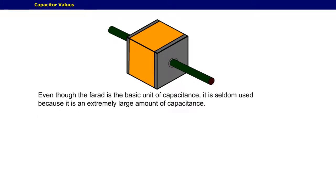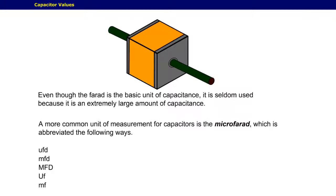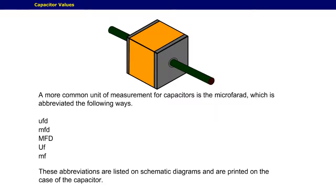Even though the farad is the basic unit of capacitance, it is seldom used because it's an extremely large amount of capacitance. A more common unit of measurement for capacitors is the microfarad, which is abbreviated the following ways. These abbreviations are listed on schematic diagrams and are printed on the case of the capacitor.